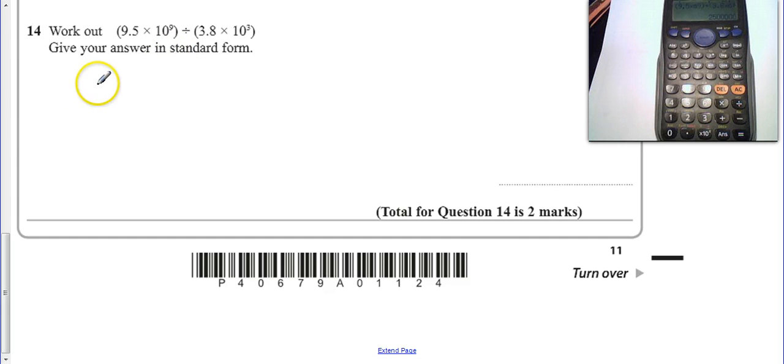So my calculator gives me, what is that, 1, 2, 3, 4, 5, so 2,500,000. So if you get that you're going to obviously get one mark. Now, the final mark is that it just gives you an answer in standard form. That's what it clearly says there.